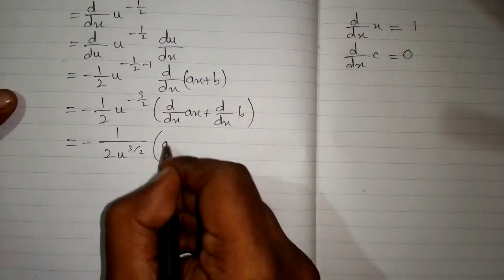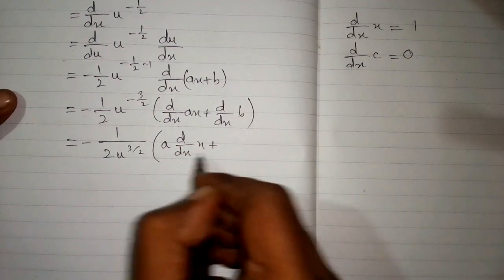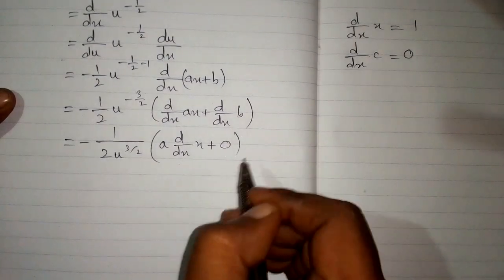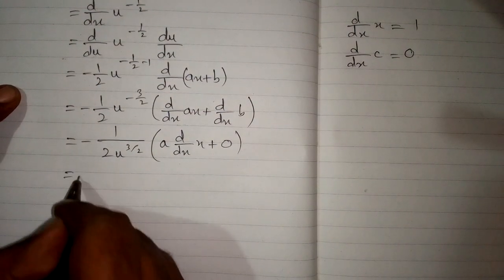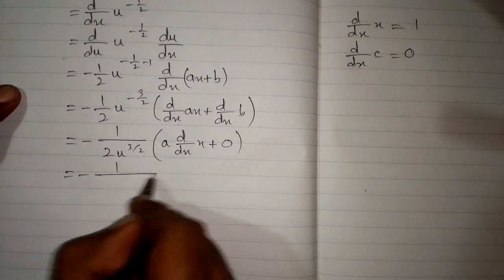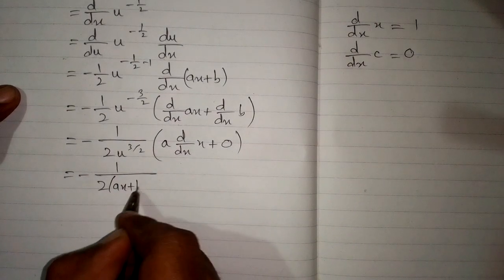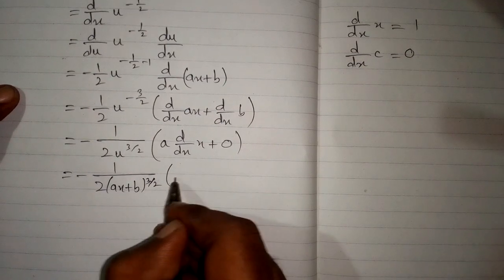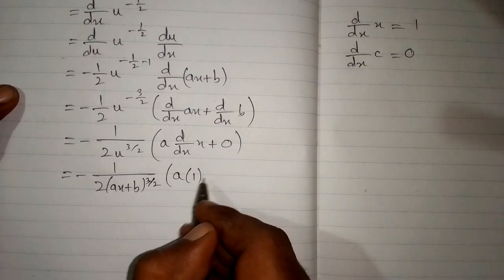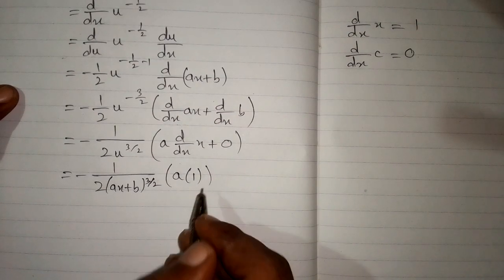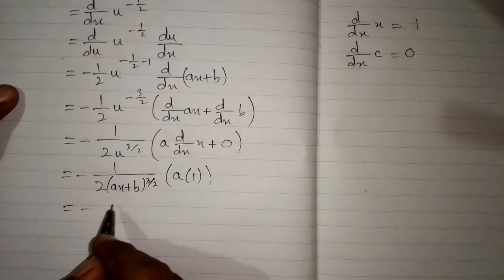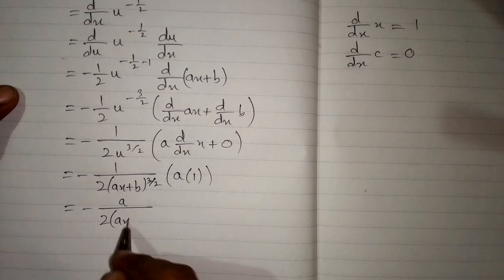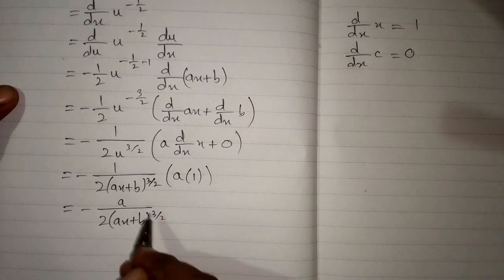This a can be written before d by dx, and the derivative of b is 0 because the derivative of a constant is 0. Then we put back the value of u which is ax plus b, whole power 3 upon 2. So, we have a times 1 and the final answer is minus a upon 2 times ax plus b whole power 3 upon 2.